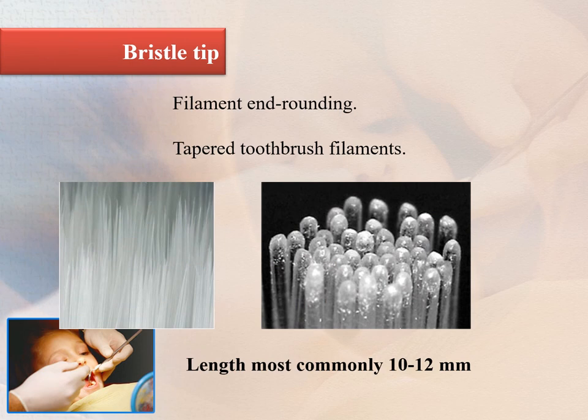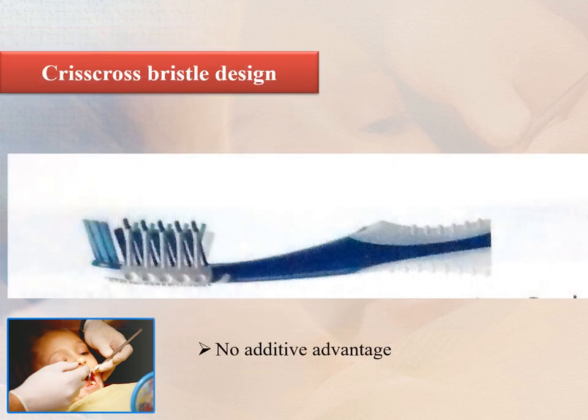Bristle tip can be filament end, rounded, or tapered. Rounded bristle ends are least traumatic and so are preferred over flat-cut bristles. The length of bristles is most commonly 10 to 12 millimeters. Crisscross bristle designs are available in the market, but research has proven no additive advantage over conventional ones.